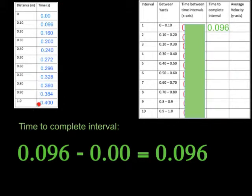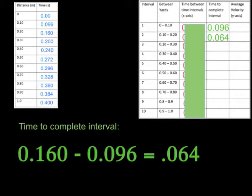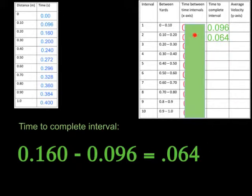To find the time to complete each interval, just take the difference between the two time values — larger minus smaller. For example: 0.096 minus 0 gives 0.096, which goes right here. Again, your numbers will be different from mine. For the interval from 0.1 to 0.2 meters: the larger value is 0.160, the smaller is 0.096, so 0.160 minus 0.096 equals 0.064, which goes in the second row of that column. You'll complete the rest on your own.